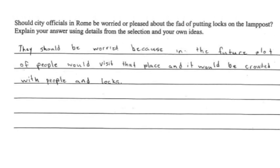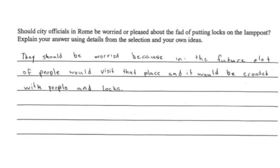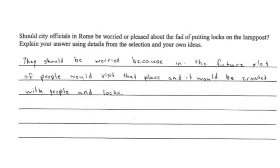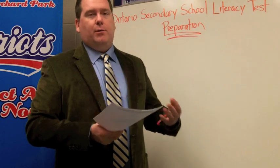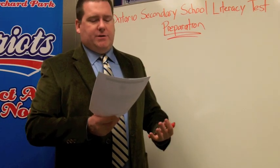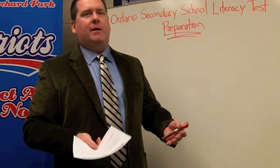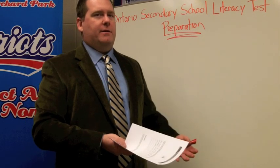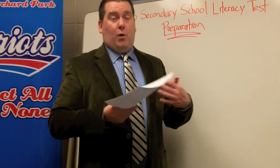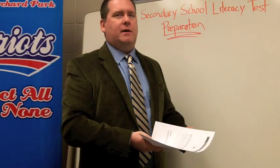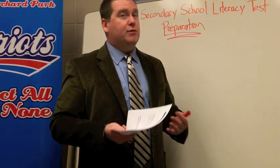The second example is a little bit better. It says 'they should be worried because in the future a lot of people would visit that place and it would be crowded with people and locks.' A couple of things to note: there are a couple of spelling mistakes — 'alot' is not a word, and 'crowded' should have a w in it. More importantly, the idea that it would just be crowded with a lot of locks seems to ignore the fact that it is a tourist destination. People would be coming specifically to see that bridge and the locks on it, so the answer doesn't recognize an important detail from the reading selection.